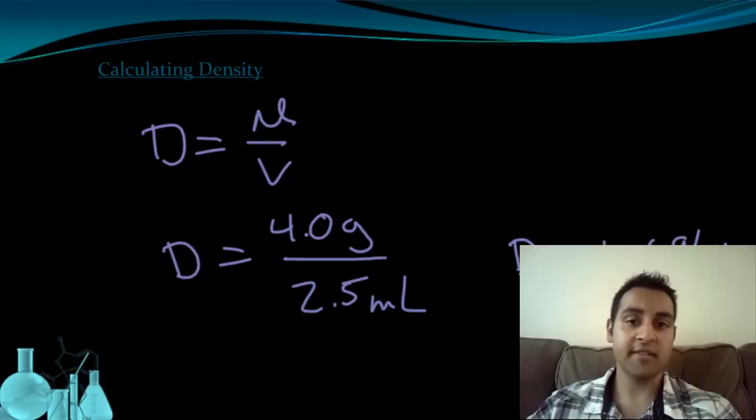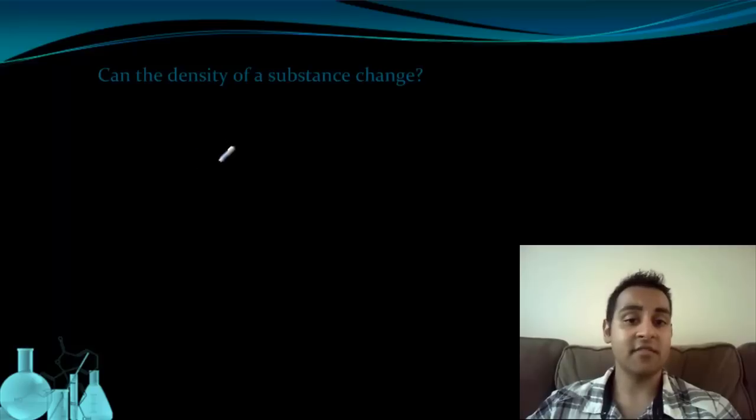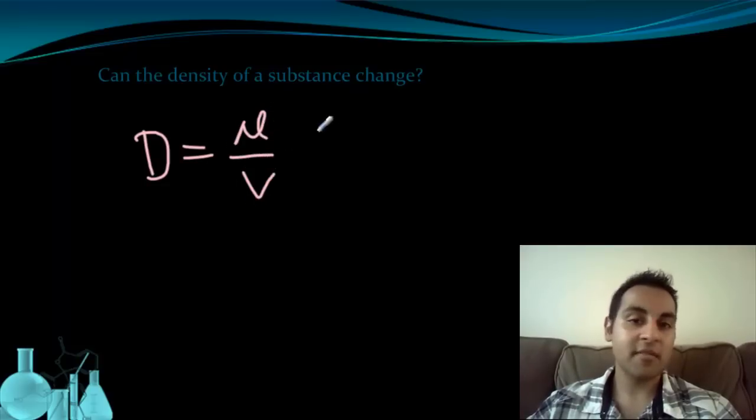Now, there's one more interesting thing we can ask ourselves about density, and that is, can the density of a substance change? Now, we just said earlier that density is an intensive property, and it only depends on what the identity of the substance is. Now, that's true to a degree. However, density is a result of a calculation, calculating mass divided by volume. So if there is some kind of factor that can affect either mass or volume, that could alter the density of a substance without changing the substance itself. So what could possibly do that? Well, the answer to that question is temperature.